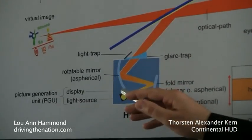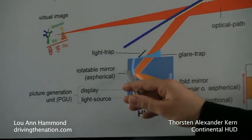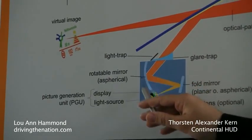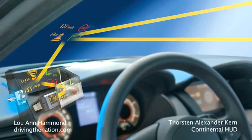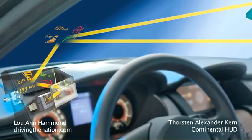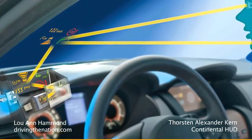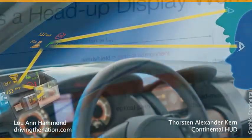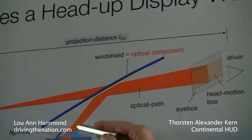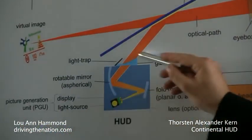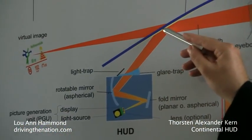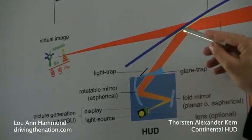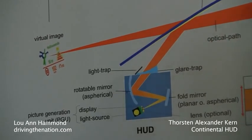And finally, the capability to rotate this image allows adapting for the driver's tallness and height. Then the image goes through the cover to the windshield. The windshield is a special one, and finally the image goes to the driver's eye.